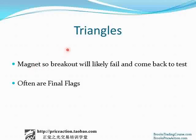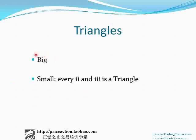Any trading range such as a triangle is a magnet, so breakouts usually fail and come back to test the trading range, and they're often the final flag of trends. Triangles can be big, they can be small — they can be as small as two inside bars, an II pattern. Both of those should be thought of as triangles, and if you look on a small enough time frame chart you'll usually discover that they are small triangles.